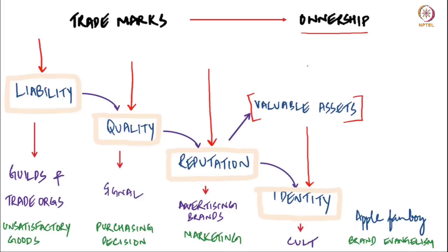For instance, when we refer to a person as an Apple fanboy or a person who uses only Apple products, the person wants himself to be identified as someone who uses a particular product. When people start identifying themselves with trademarks, some have referred to this as a kind of a cult that gets created because of the trademarks themselves. We are referring to a phase where trademarks no longer perform the traditional function of liability, quality, or reputation — they perform an additional function of people being able to identify themselves through a mark.